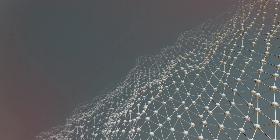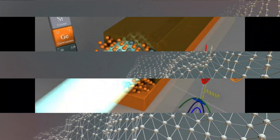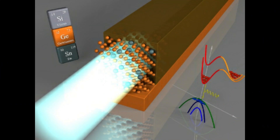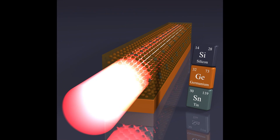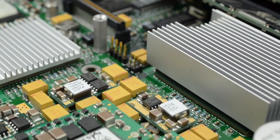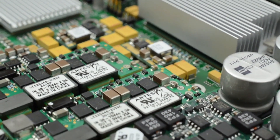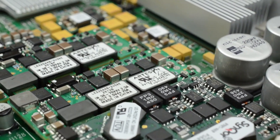Examples of semiconductors are silicon and germanium. We use semiconductors in electronics boards.